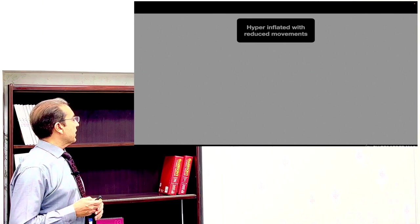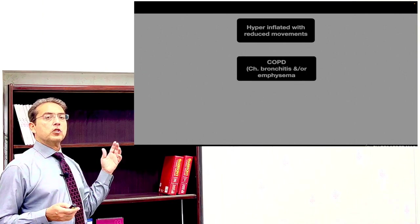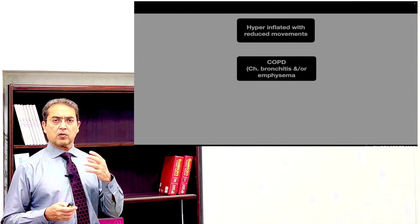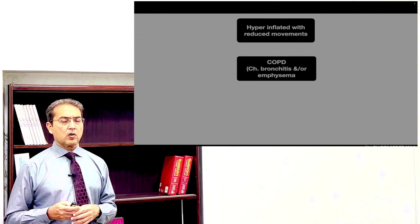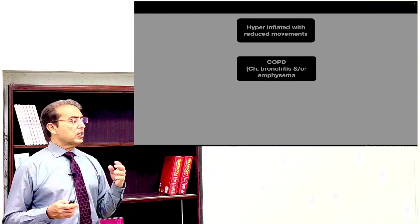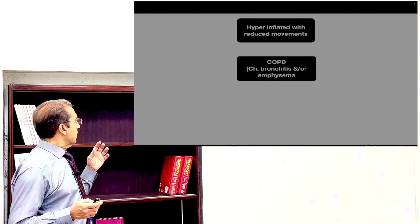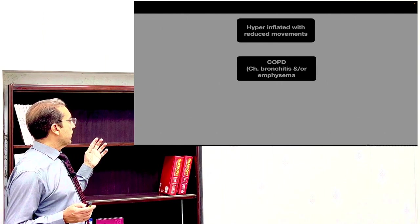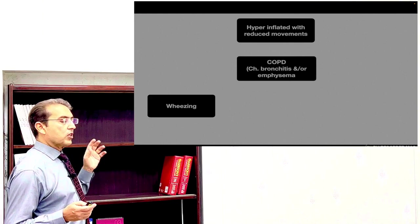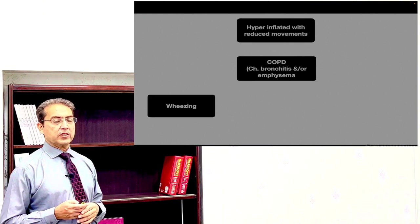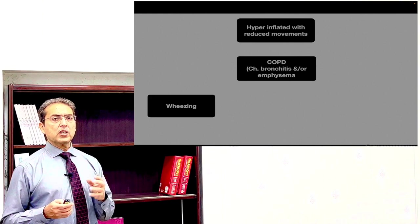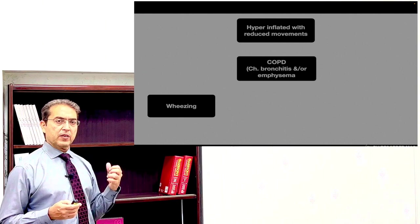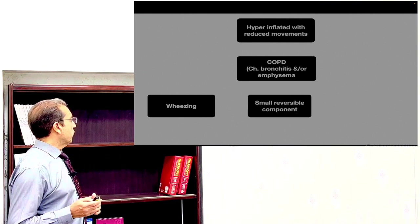A hyperinflated chest with reduced movements is usually caused by chronic obstructive pulmonary disease — for example, chronic bronchitis or chronic emphysema. So COPD is the cause of a hyperinflated chest with reduced movements. When you see this patient, look for the presence of wheeze, which may be present. Occasionally you may hear scattered crepitations, but the main feature is wheeze.